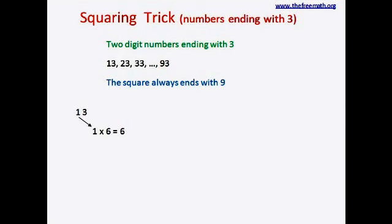In the second step, again we take the same digit and we square it, so 1 multiplied by 1 is equal to 1. Now our final answer is 1, which is the answer from the second step, followed by 6, which is the answer from the first step, followed by 9. Why 9? Because every such square ends with 9, that means 13 squared is 169.